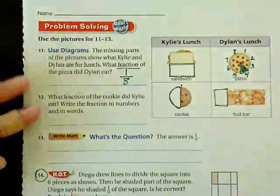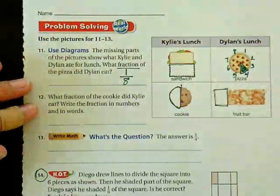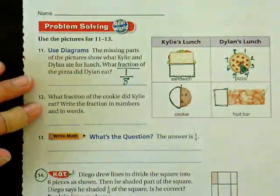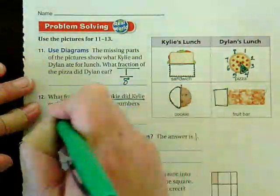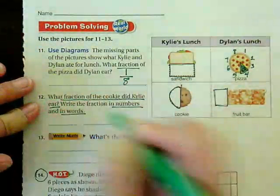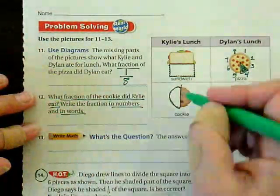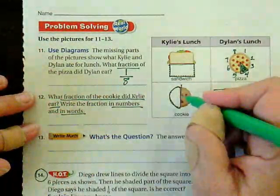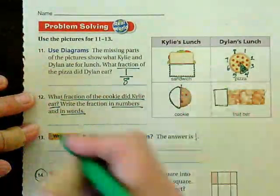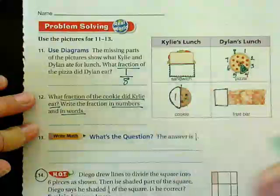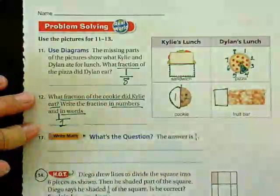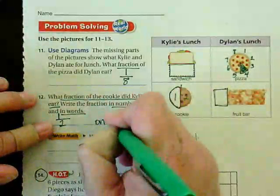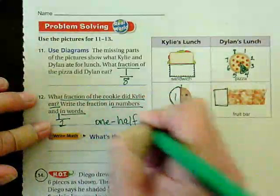Okay, let's look at number 12. What fraction of the cookie did Kylie eat? Write the fraction in numbers and in words. So I had a cookie. It was one whole cookie that was split into two pieces — one piece, two pieces. So I have two pieces, and she ate one of them.